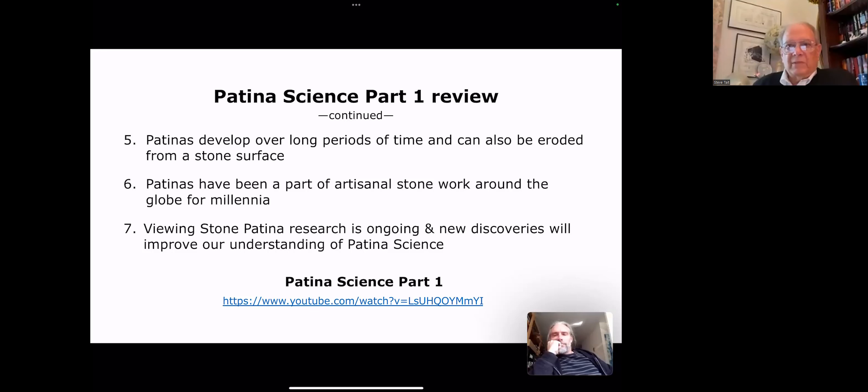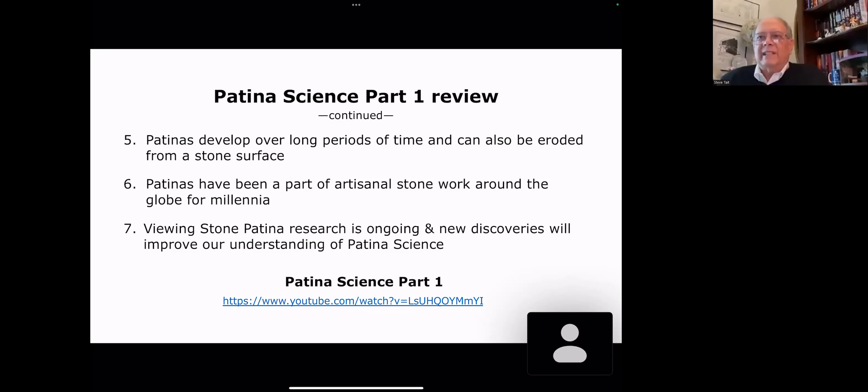Patinas develop over long periods of time. They can also be eroded from stone surfaces. For a while, there was excitement over desert varnishes because they said this is like a tree ring. We can count the rings and we can know how old this patina is. Unfortunately, erosion does remove layers from time to time, so it makes using it and dating very difficult. Artisanal patinas have been around the globe for millennia, and viewing stone patina research is ongoing.